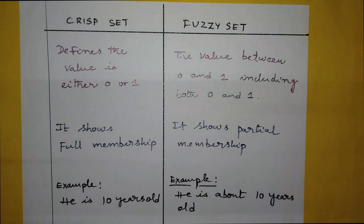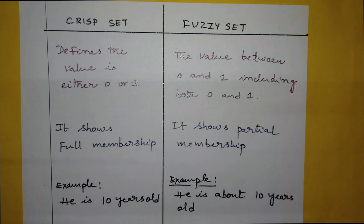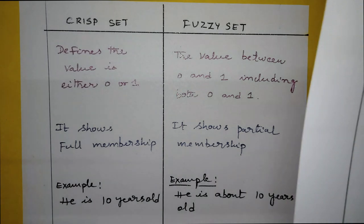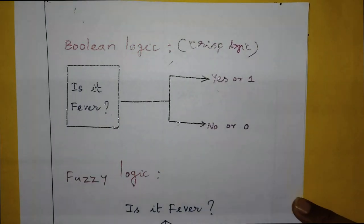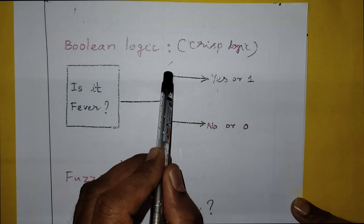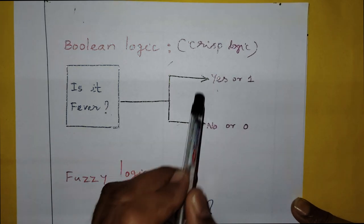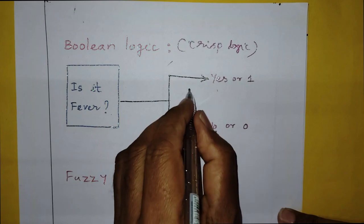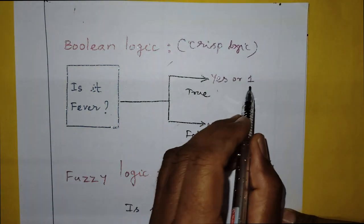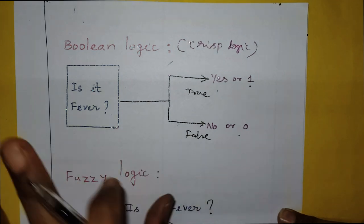Welcome to Lotus Student Mentor channel. In this session we are going to study the difference between crisp set and fuzzy set. To understand this completely, you have to understand crisp logic and fuzzy logic. As explained in the previous lecture, boolean logic or crisp logic is based on yes or no, true or false — either one or zero.